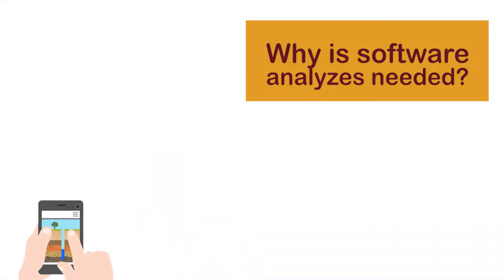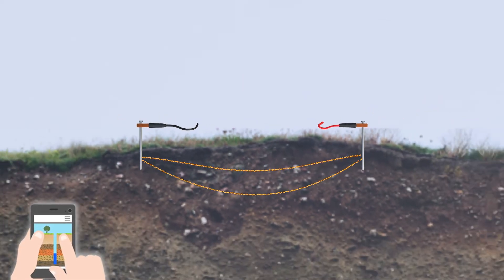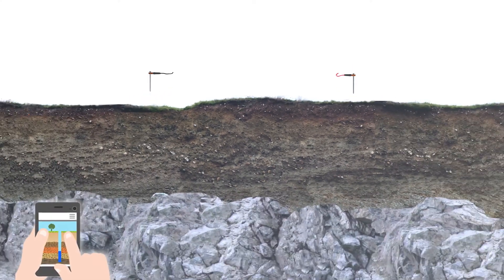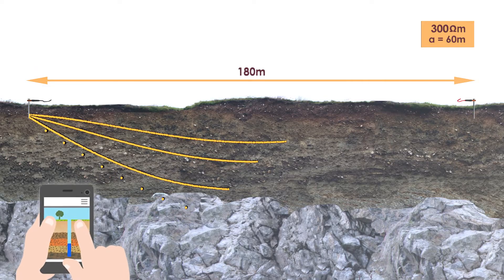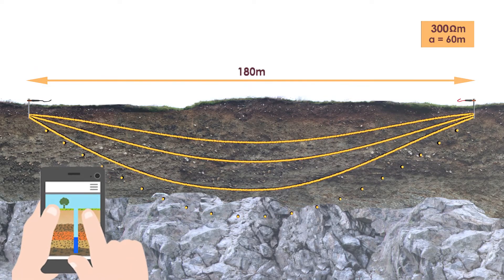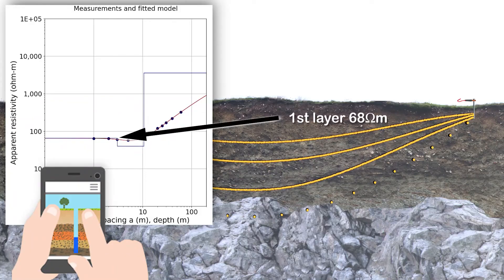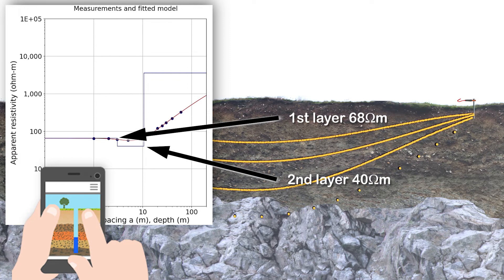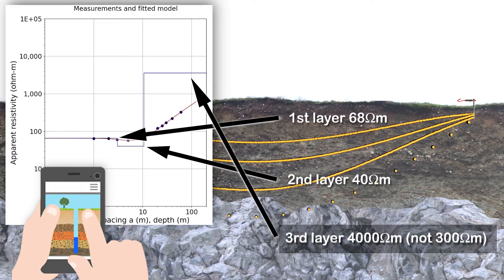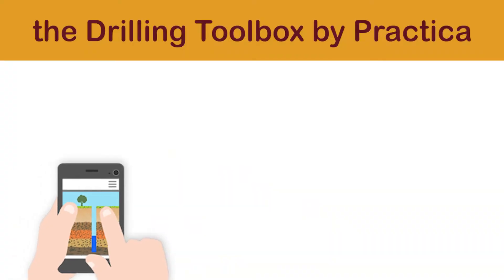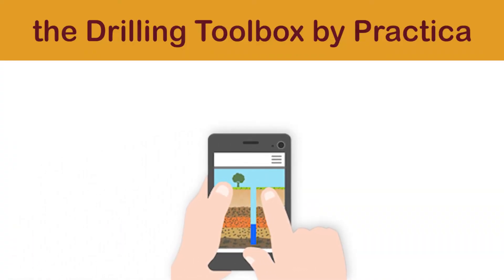Why is computer analysis needed? Even if the pins are far apart, the majority of electricity will still flow in a straight line on the surface because that is the shortest route — only a small part will reach deeper. That is one reason we need complicated software to compensate for this effect. But the software can only compensate if you have also measured many shallow levels, even if they are not interesting for the driller. In other words, the software needs to know the resistivity of all above layers before it can say anything about a deeper layer. The difference between the measurement result — here 300 ohm meters — and the real resistivity — here 4000 ohm meters — is often huge. In this example we use the Drilling Toolbox Android app made by Praktica.